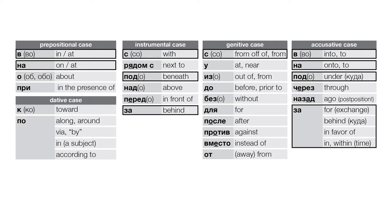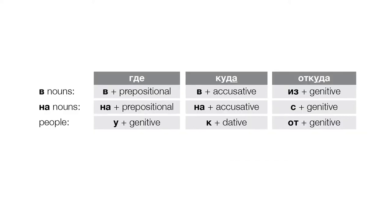We're going to learn a lot more about motion verbs this year, including prefixes on motion verbs, and we'll be seeing где, куда, and откуда phrases constantly. Whenever we're talking about a location — including visiting a person — we have three possibilities. Где expressions mean we're at the place or at a person's place. Куда expressions mean we're on our way there, going to the location or person. And откуда expressions mean we're coming from the place or person.